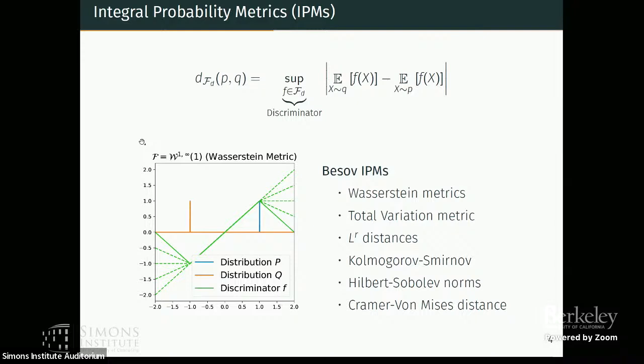And one of the main reasons that we did this is because these spaces are really general. And if you choose different Besov spaces, then you get different metrics from this example. So you can pick FD to be one Lipschitz and you get the Wasserstein metric. If you choose it to be different sets, then you get all these other total variation metric or smaller metrics and so on.